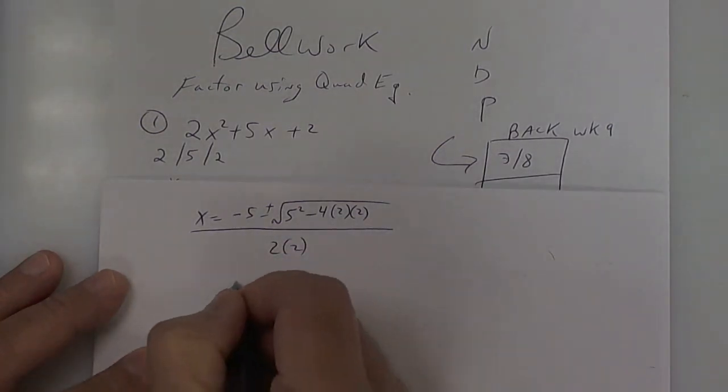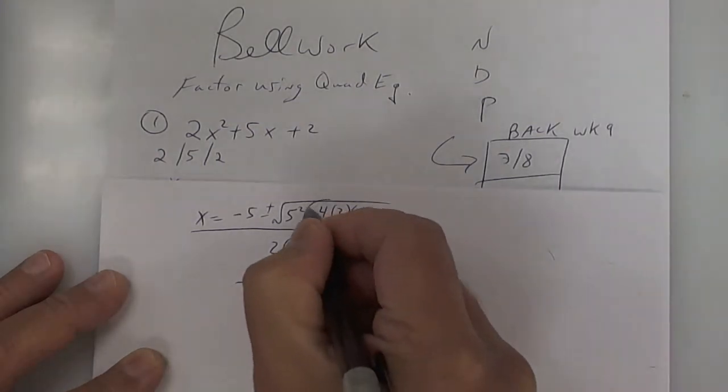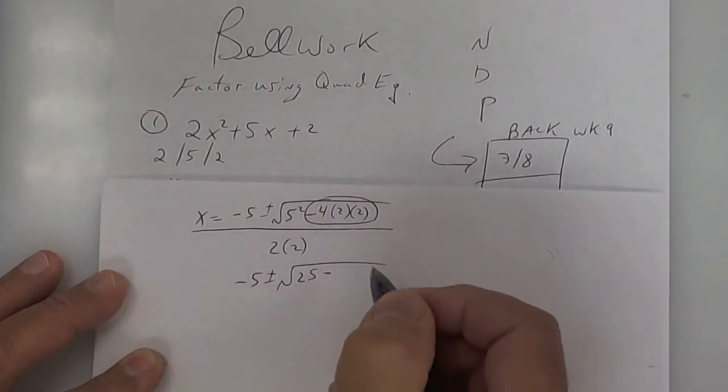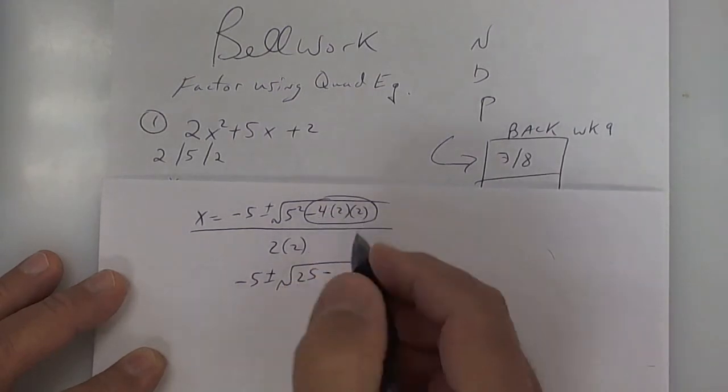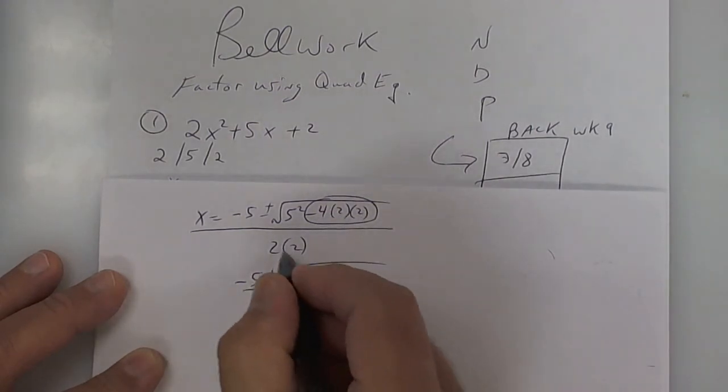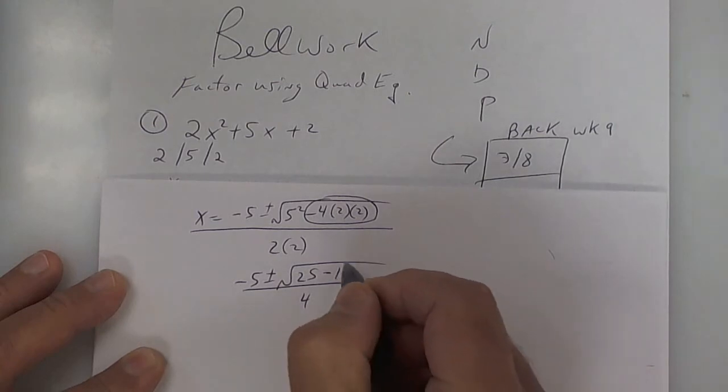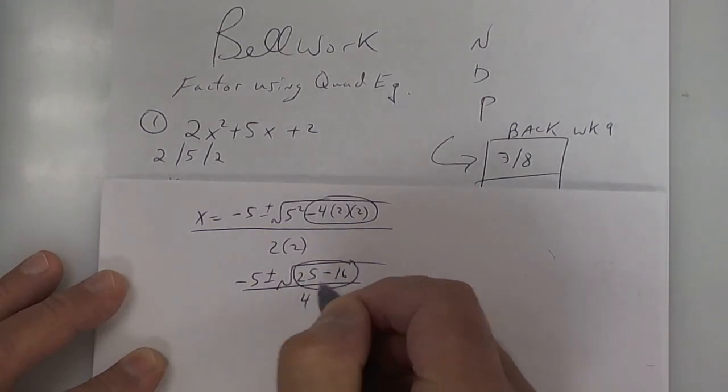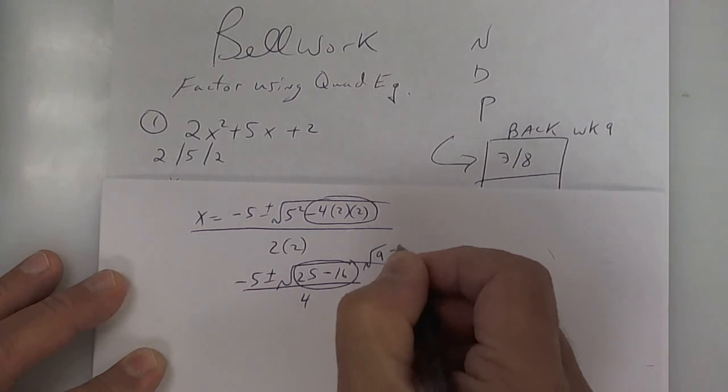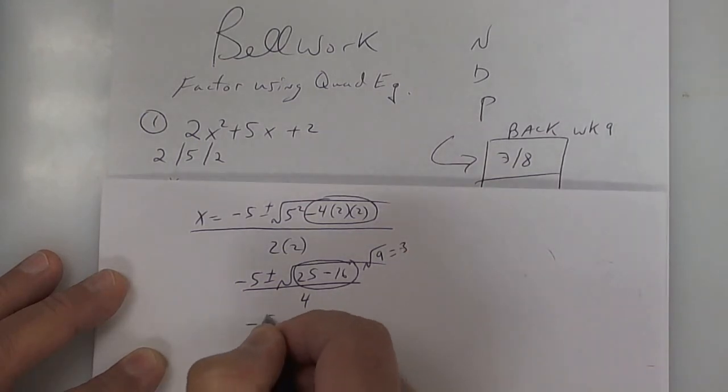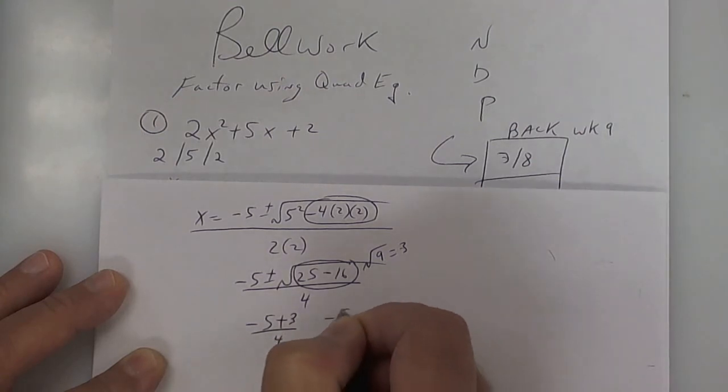There it is. So you're going to get negative 5 plus or minus the square root of 25. There's only one minus here, so it's going to be a negative. This is 4 times 4 is 16, and then 2 times 2 is 4. This right here is going to be 9. So the square root of 9 is 3. So now you're going to have negative 5 plus 3 divided by 4, and negative 5 minus 3 divided by 4.